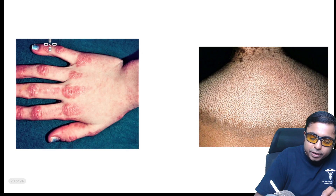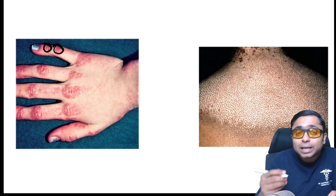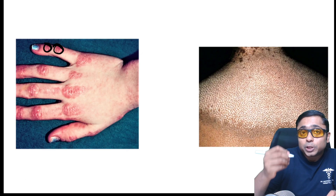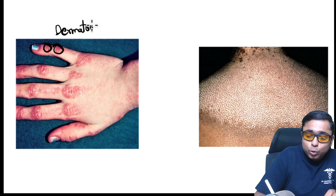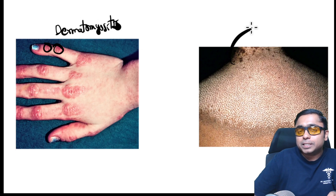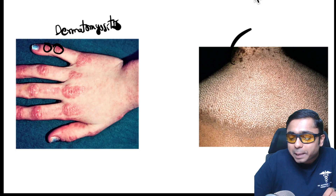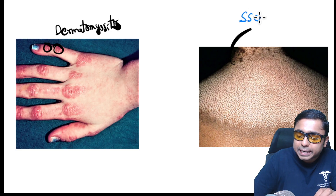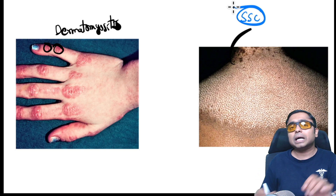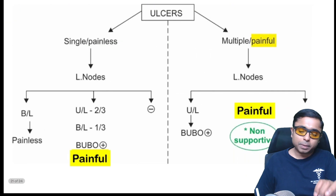Gottron's papules are pathognomonic for dermatomyositis. Salt and pepper pigmentation is very classically seen in scleroderma.